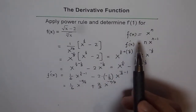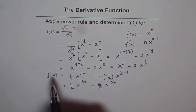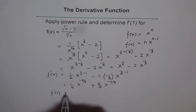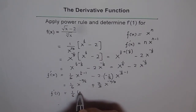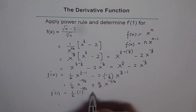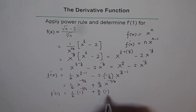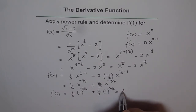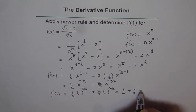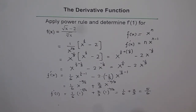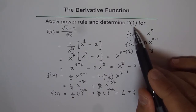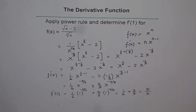Now, for finding the answer — the derivative at x equals 1 — we plug in 1 for x. Any power of 1 is just 1, so we get 1/6 for the first term plus 2/3. Making a common denominator of 6: 1/6 plus 4/6 equals 5/6. So f'(1) equals 5/6.